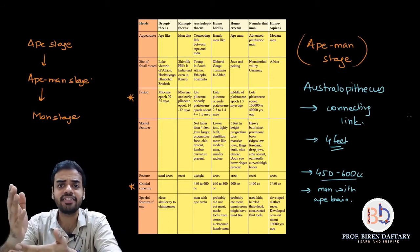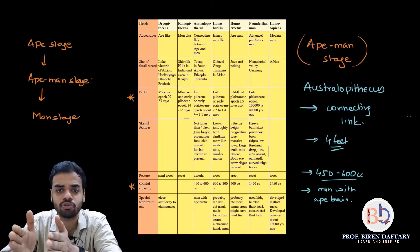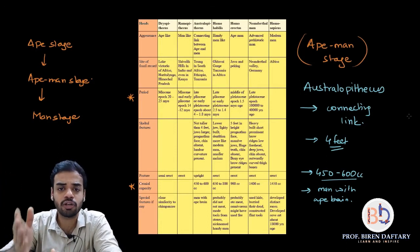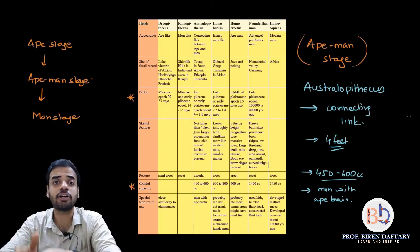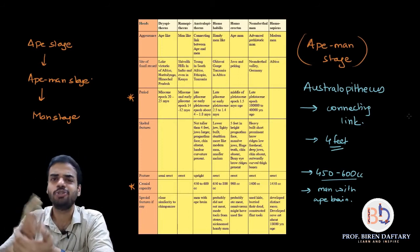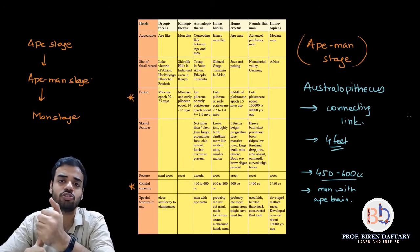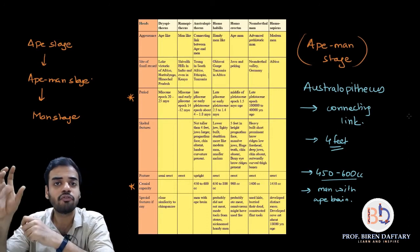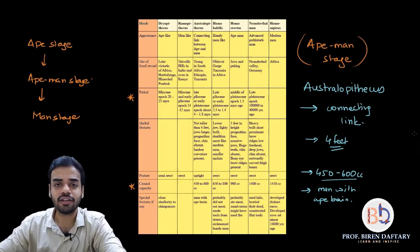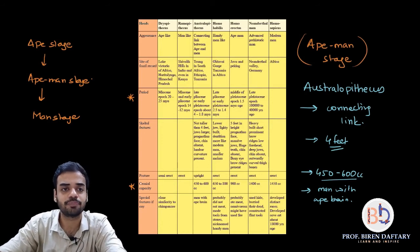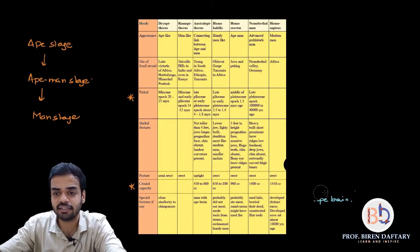The special feature of Australopithecus is that it is called 'man with an ape brain' — the physical characteristics are man-like but the brain is very small, like that of an ape. After Australopithecus, all subsequent stages are called man stages.